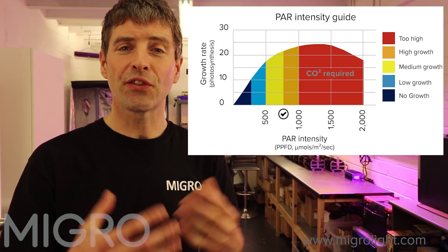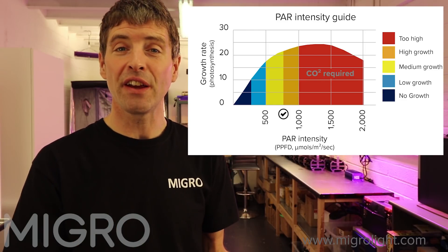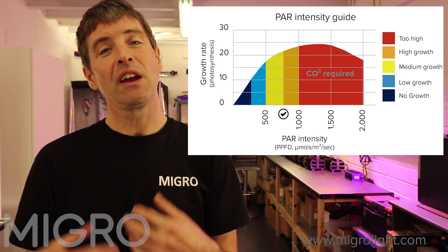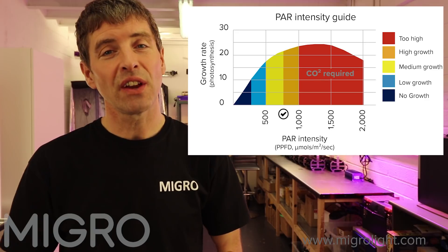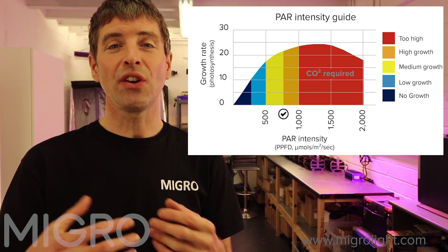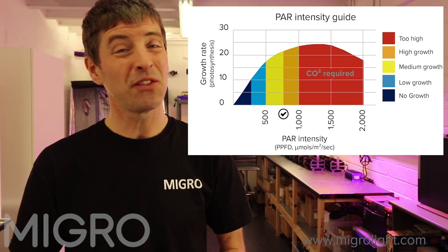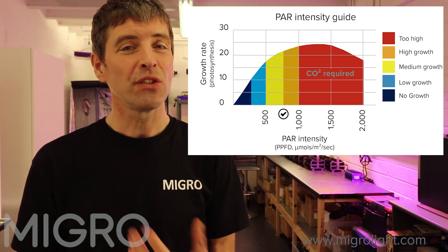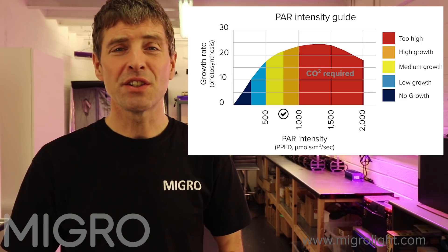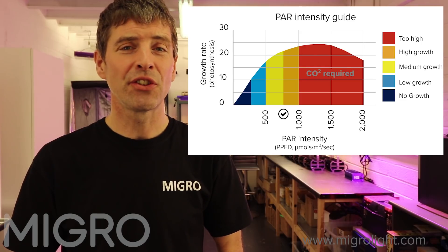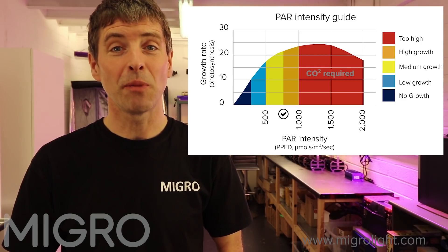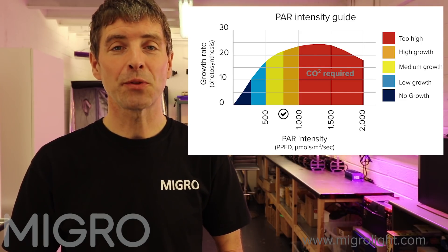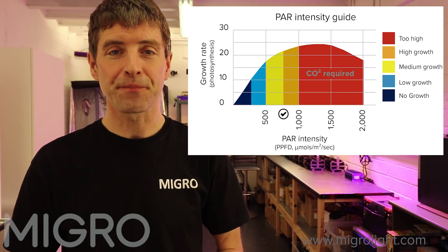Of course this is for the flowering stage. In the vegging stage you would aim to get about 50% of those levels, so somewhere in the region of about 300–350 micromoles per meter squared per second.